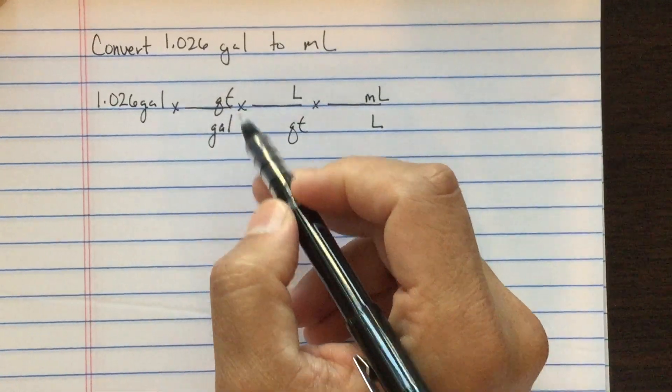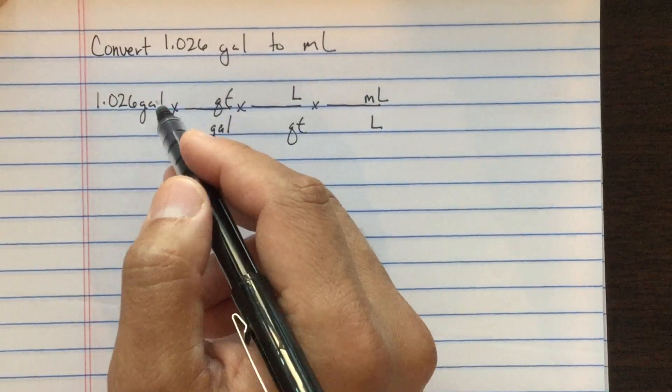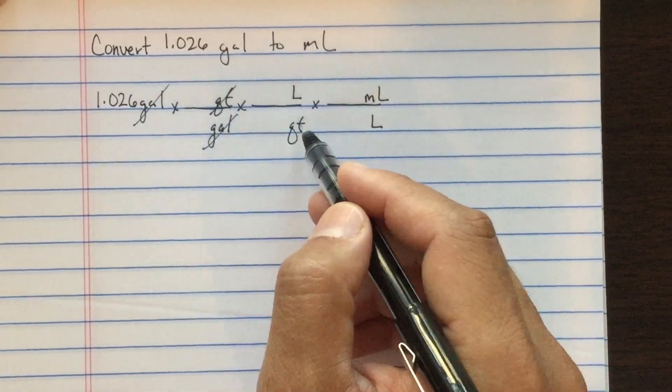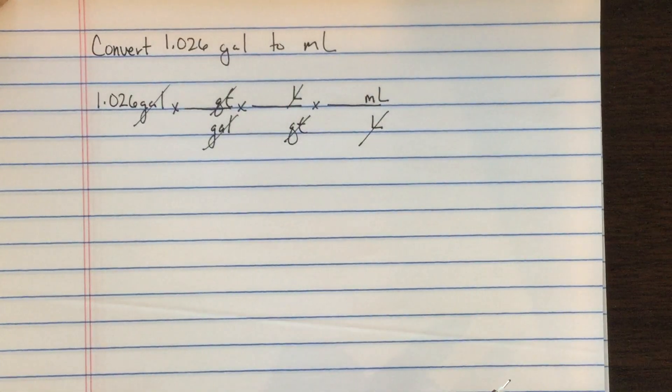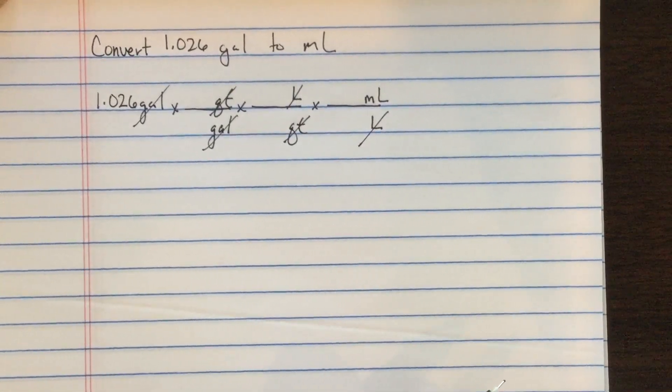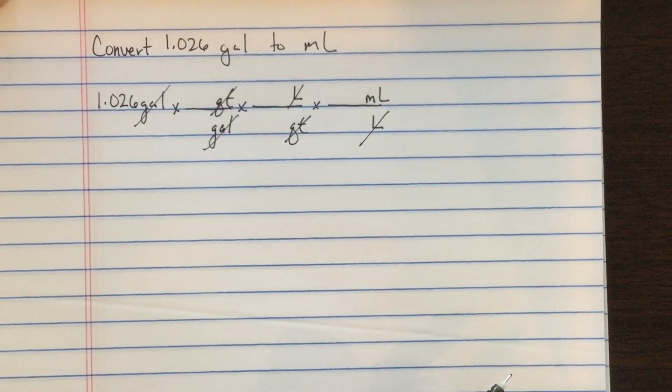We're putting these relationships together in order so that we can see this canceling of all these units. Now that we know that our units work out, we can go ahead and plug in our values.